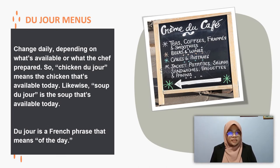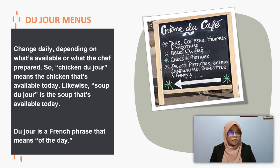As you can see in the picture, here is an example of a du jour menu. Du jour menus change daily depending on what is available or what the chef prepares. For example, 'chicken du jour' means the chicken that is available today. Likewise, 'soup du jour' is the soup available today in that restaurant. Du jour is a French phrase that means 'of the day.'